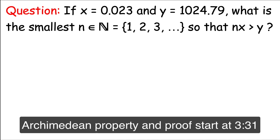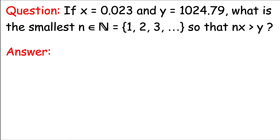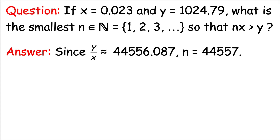Here's an arithmetic question for you. If x is 0.023 and y is 1024.79, what is the smallest natural number n so that n times x is greater than y? Since y divided by x is 44,556.087, we can take n to be the natural number 44,557. This means it would take 44,557 little line segments of length 0.023 put together to get a line segment with length just greater than 1024.79.